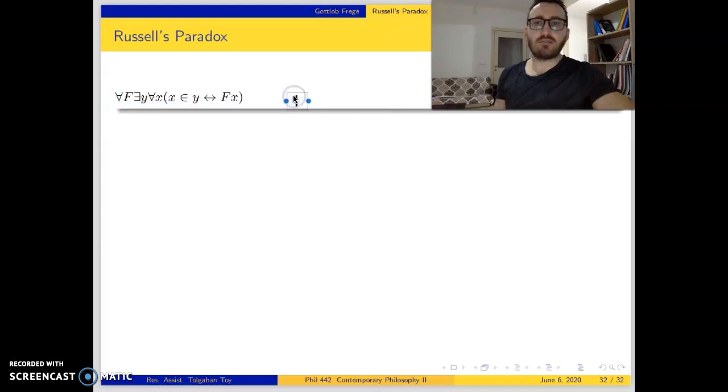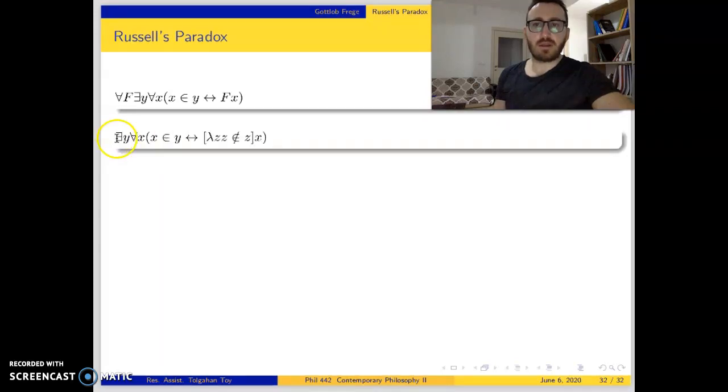But from this we will derive a contradiction. First, let's do universal instantiation. In this instantiation, we have this concept instead of f. The concept lambda z, z is not an element of z, is substituted for f.